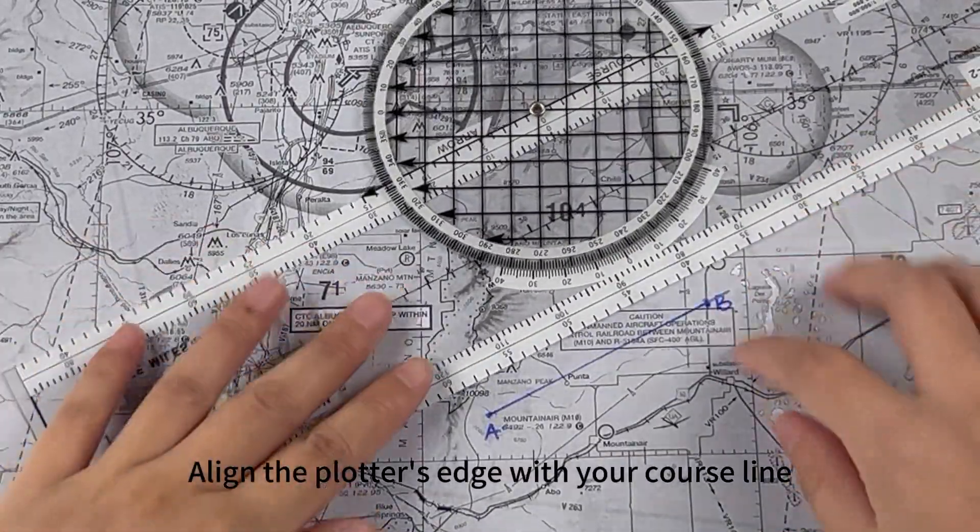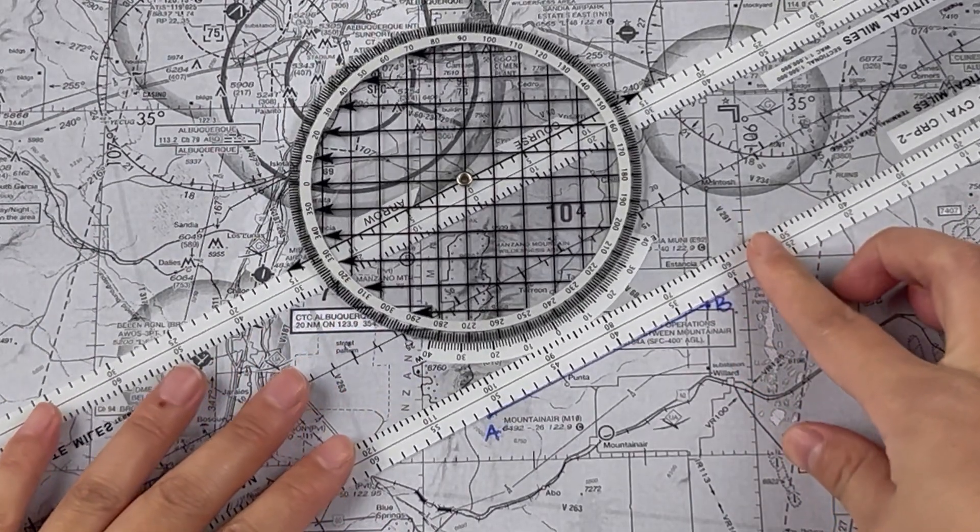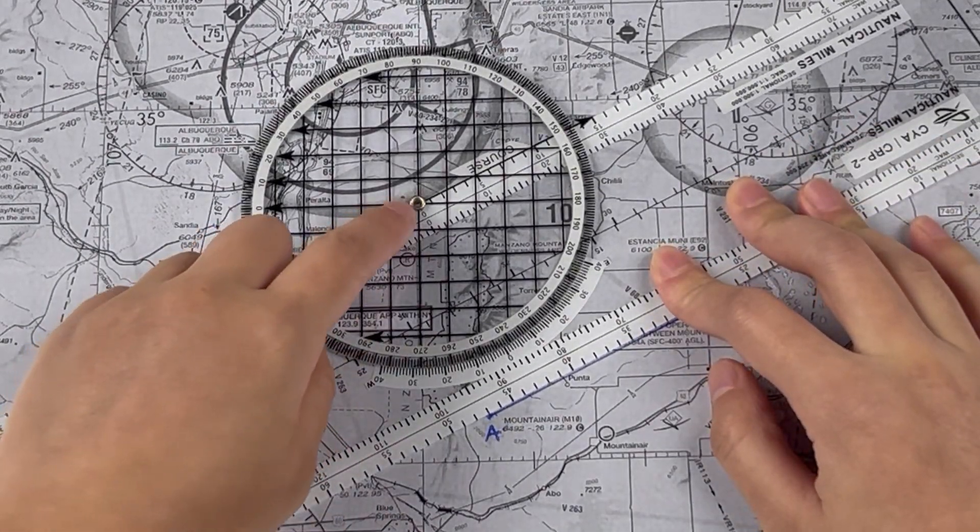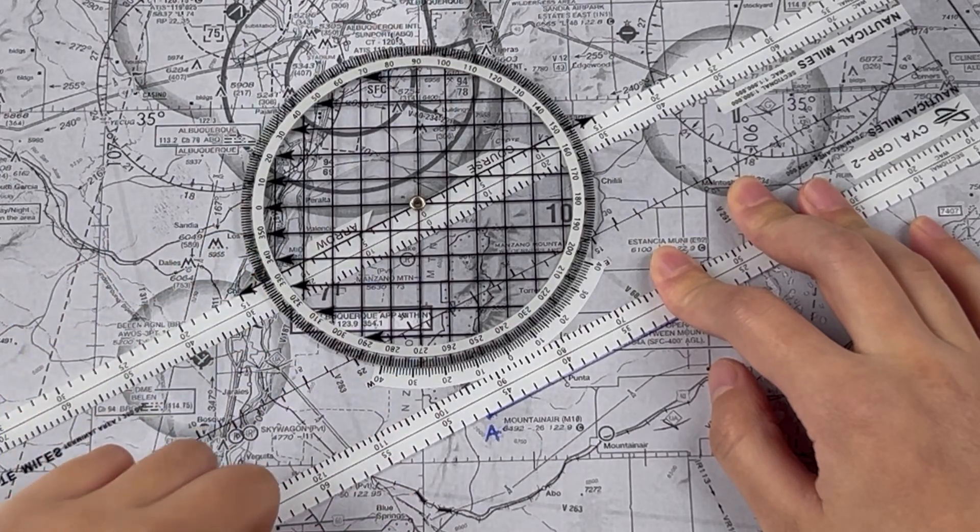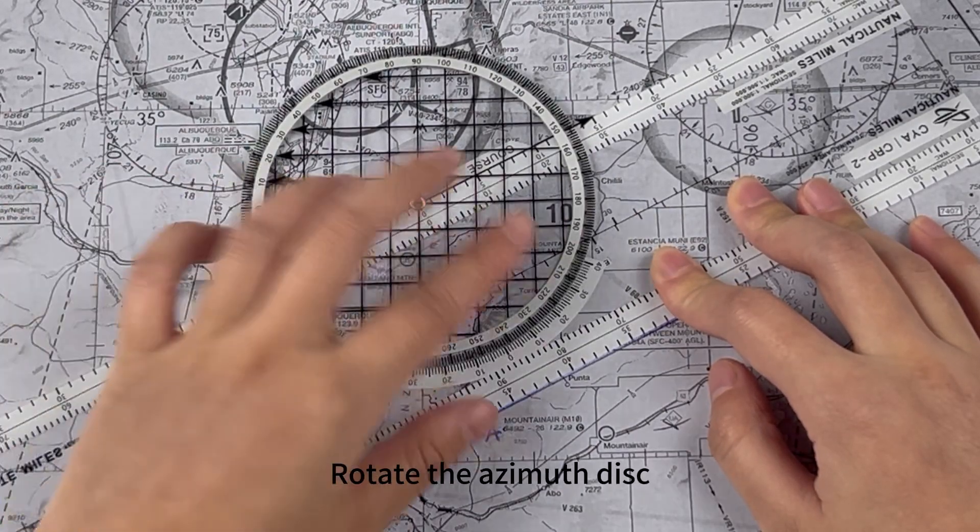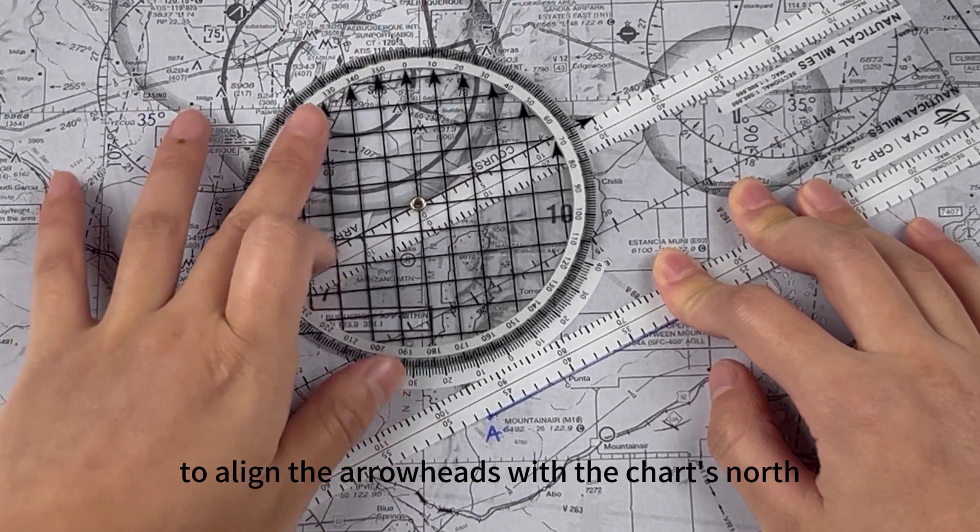Align the plotter's edge with your course line. Rotate the movable disk to align the arrow with the chart's north.